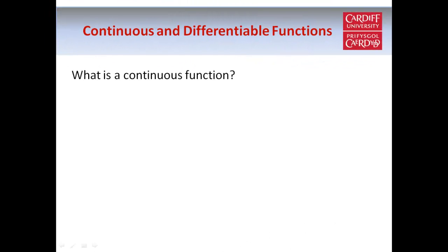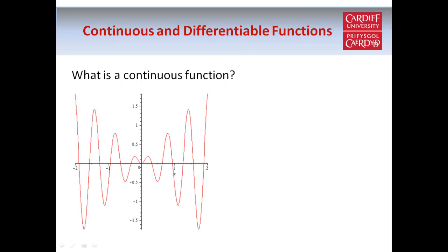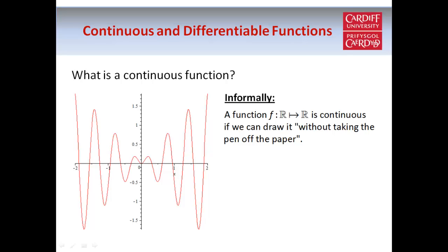So what is a continuous function? The diagram shows an example of a continuous function, and the informal definition is actually very simple. We say that a function is continuous if it's possible to draw the graph of the function without taking your pen off the paper. Just to be clear, this is not a proper definition — it's just something to have in the back of your mind as an intuitive concept of a continuous function.